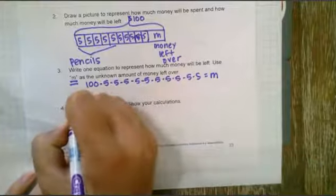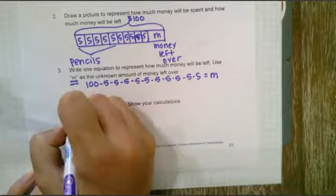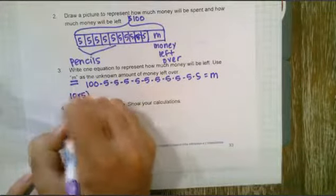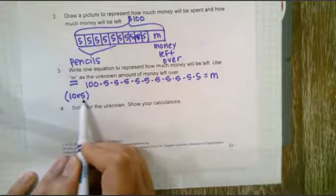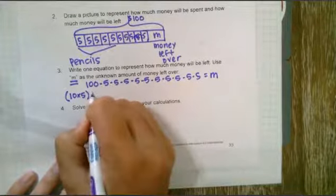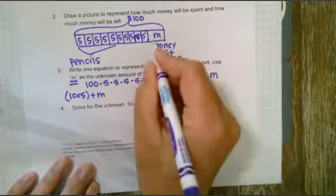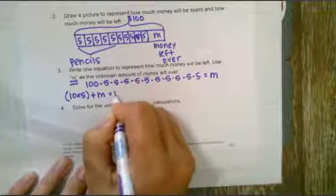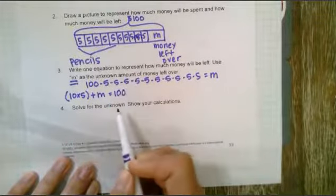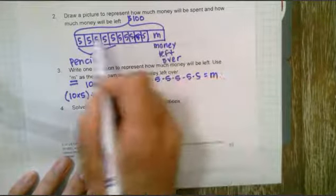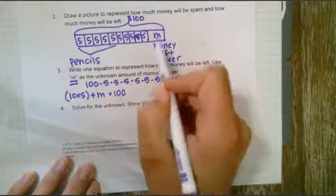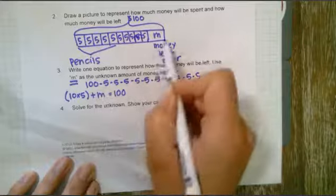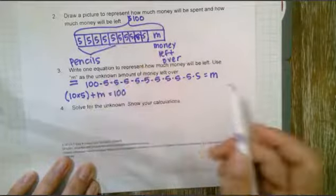Here's another way I could do it. I could say 10 times 5, because there's the ten boxes of pencils that each cost five dollars, plus m, my money left over, is equal to a hundred dollars. It might be easier for you to look at this tape diagram to see this equation because I see ten groups of five, 10 times 5, and I see m plus m and that's equal to this a hundred dollars.